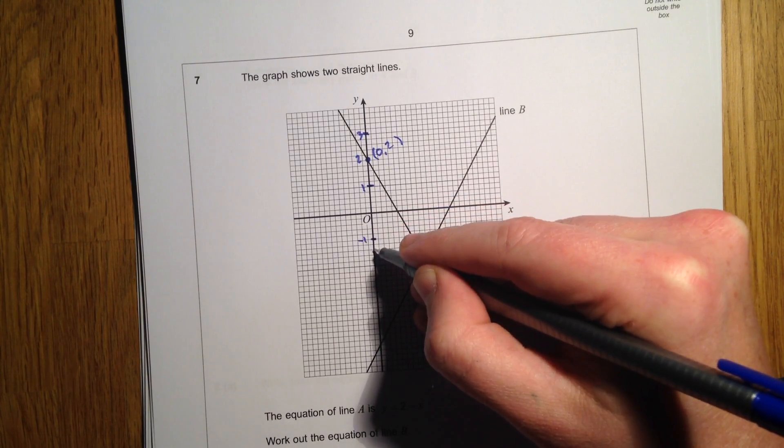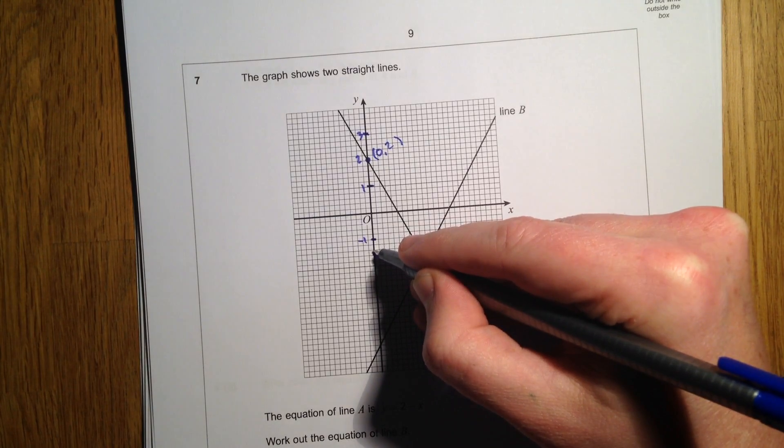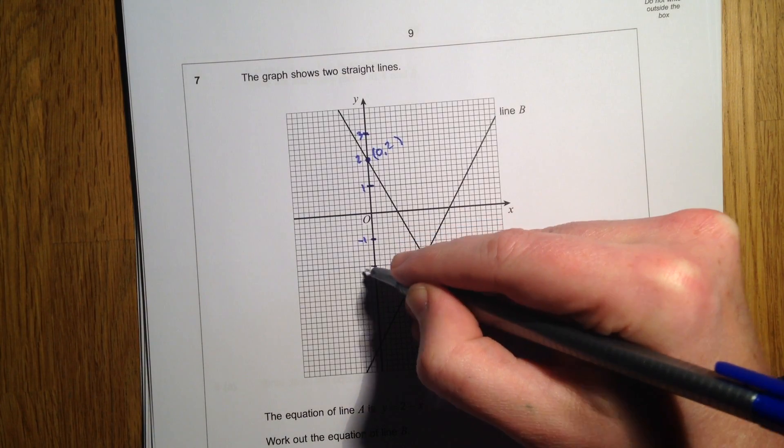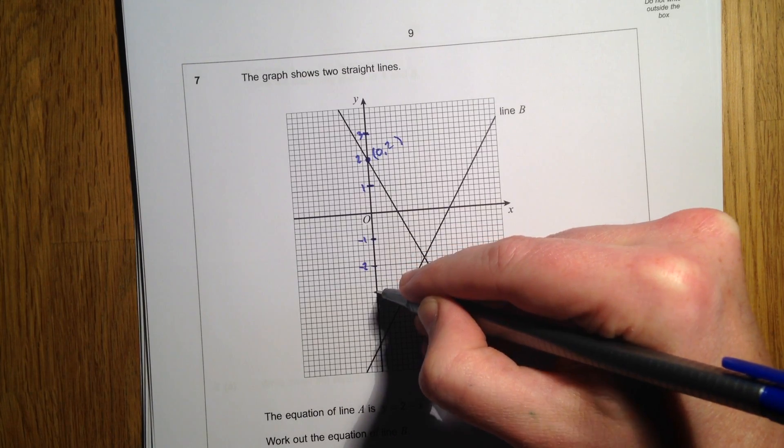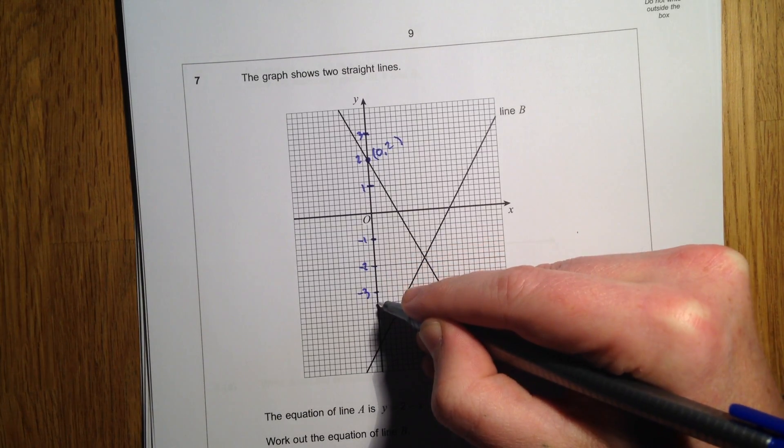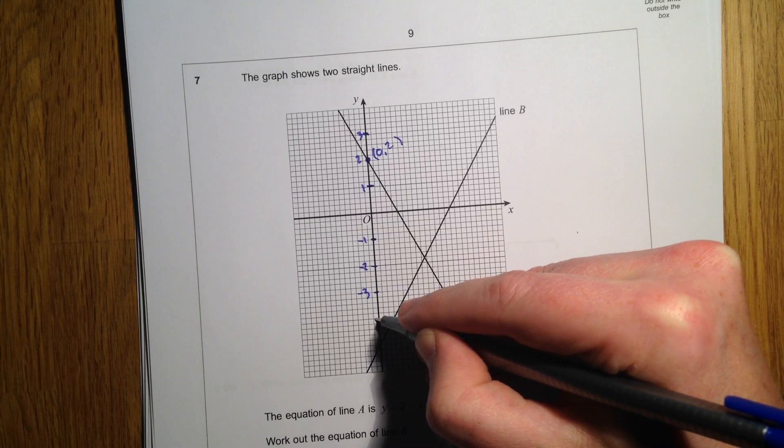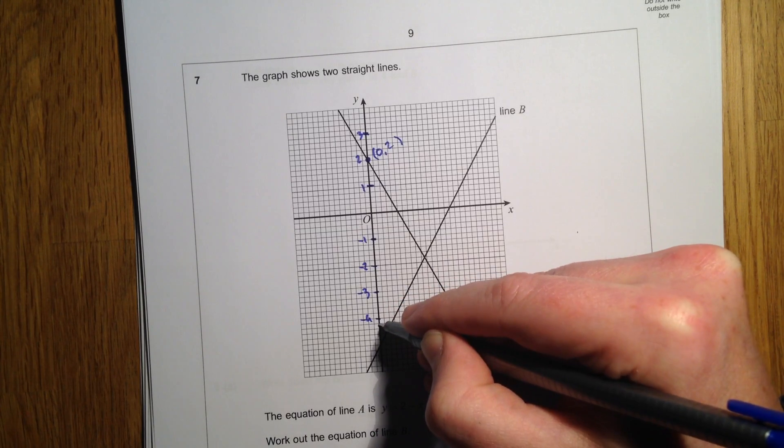Now if I just count the number of squares up here: 1, 2, 3, 4, 5, 6, 7, 8, 9, 10. So 10 squares is 2, so 5 squares is 1.